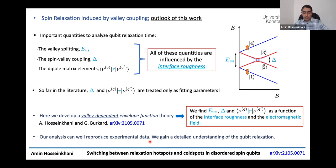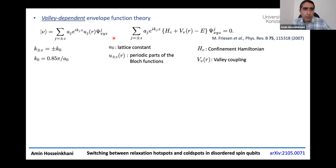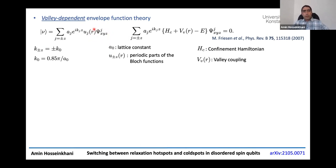The starting point is to use effective mass theory, where the full electron wave function is written in terms of an envelope function times another function that captures the short wavelength behavior determined by the lattice constant. The important step is to obtain this envelope function, and the equation governing it is first given in this paper here.